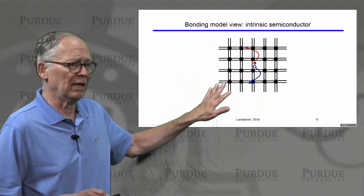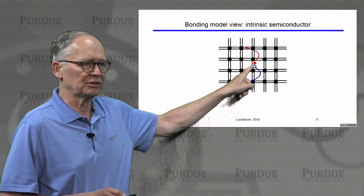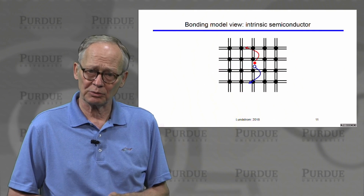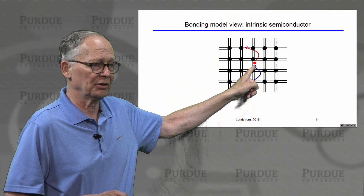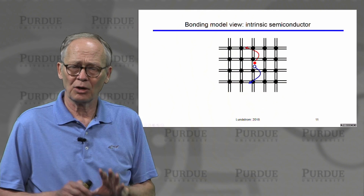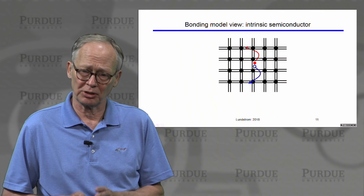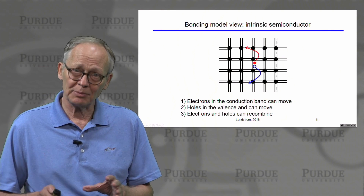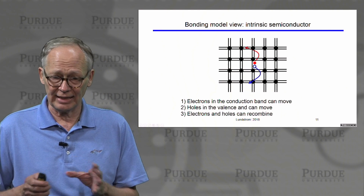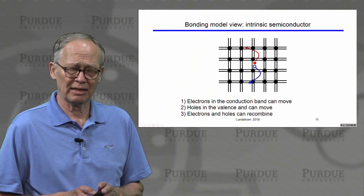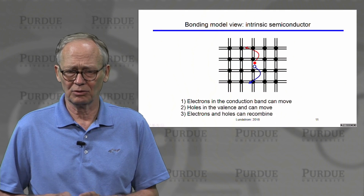We also introduced the bonding model, which gives a convenient way to represent what's going on. Breaking a covalent bond leads to an electron that can wander around the crystal — that's an electron in the conduction band. But that vacant bond, the hole, can also wander around as other electrons from valence bonds hop into it. The hole can behave as though it is a positive charge-carrying particle. Electrons and holes can recombine and annihilate each other, giving off energy in the form of light or heat.